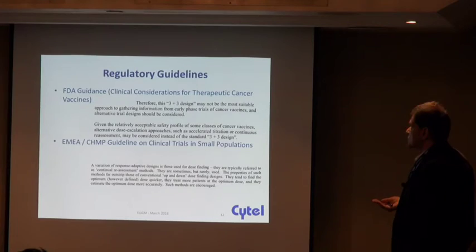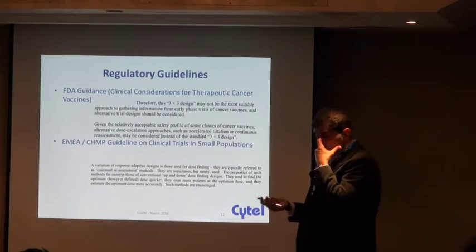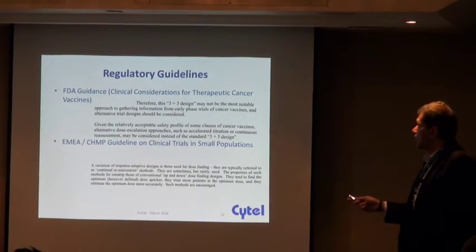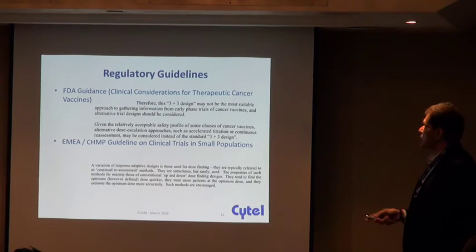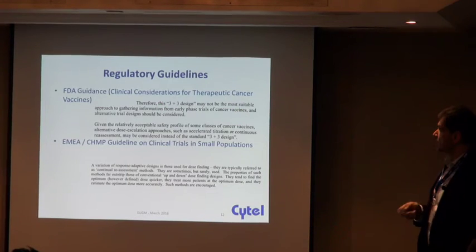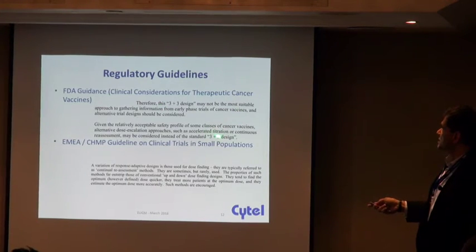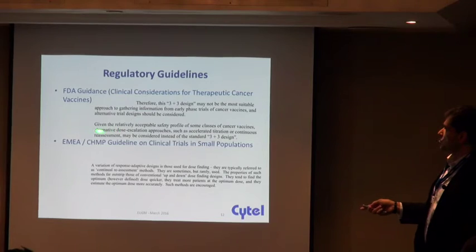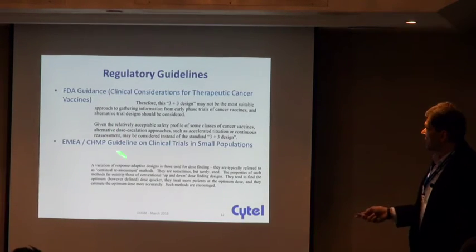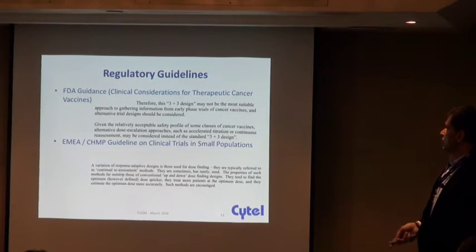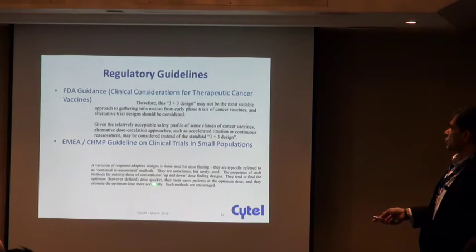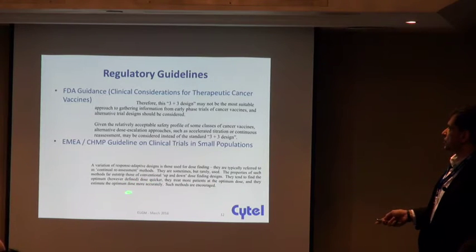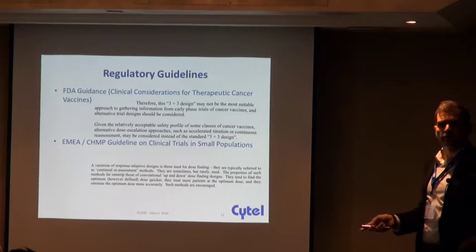Lots of criticisms. The regulators have also taken notice: in the FDA guidance for therapeutic cancer vaccines, they mentioned that the 3+3 design may not be the most suitable approach, and other designs such as accelerated titration or continual reassessment may be considered instead. The Europeans have also taken notice, mentioning that designs like the continual reassessment method treat more patients at the optimum dose, find the optimum dose quicker, and estimate it more accurately. Such methods are encouraged.